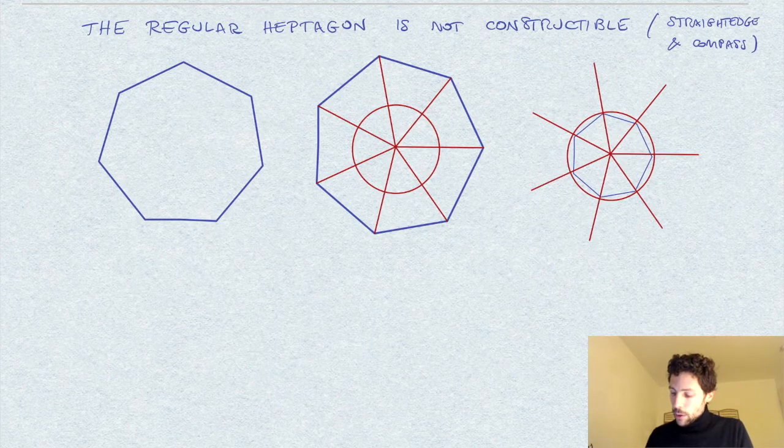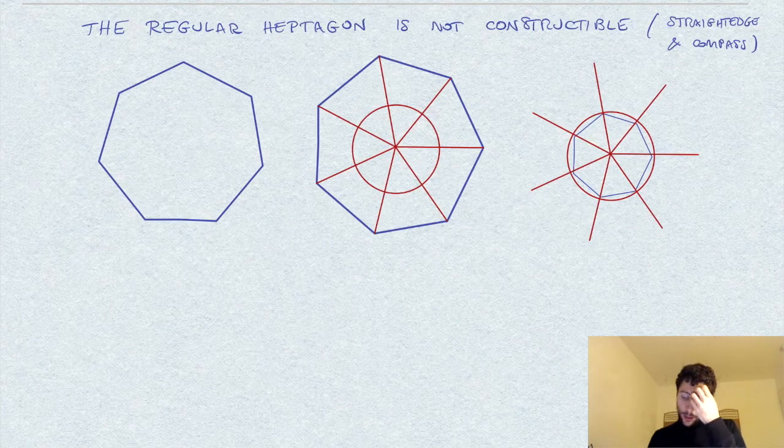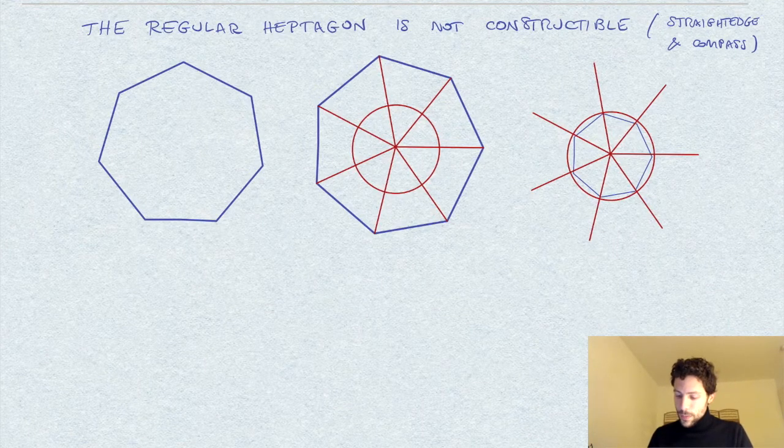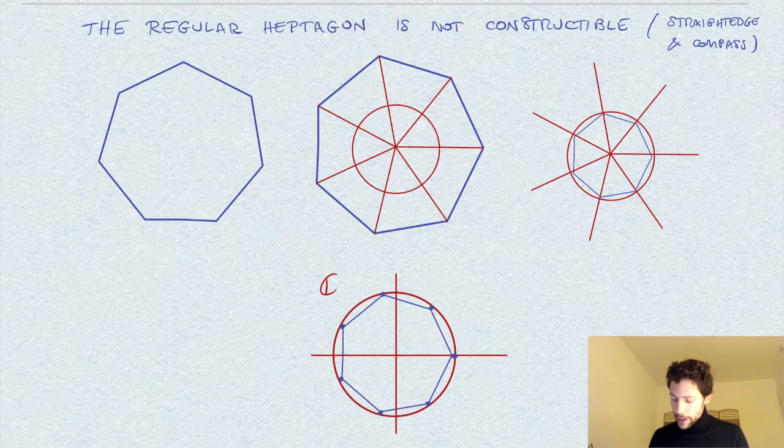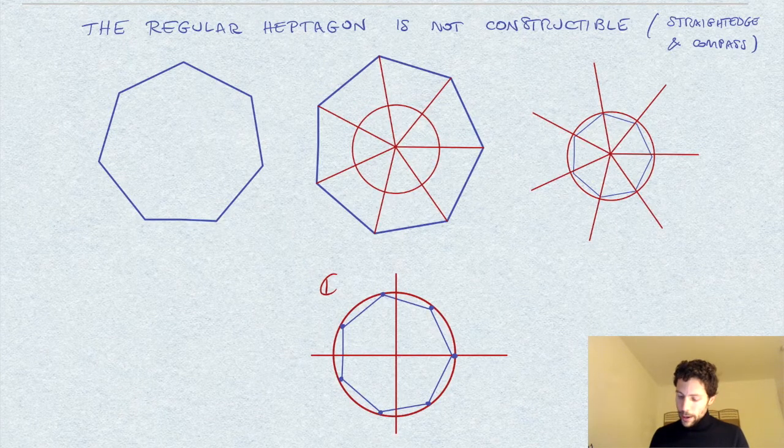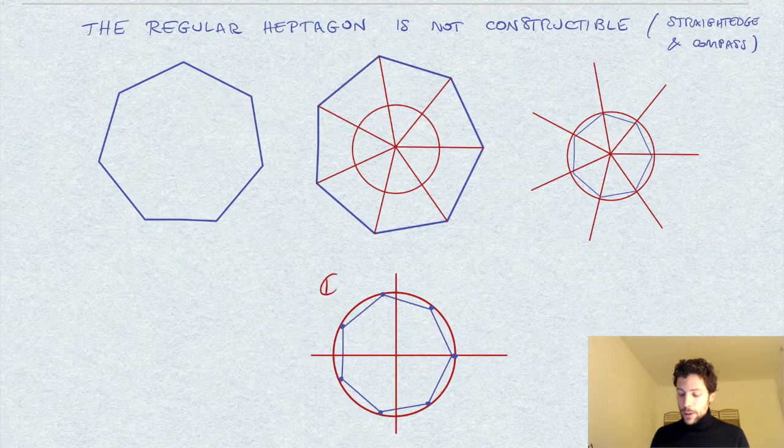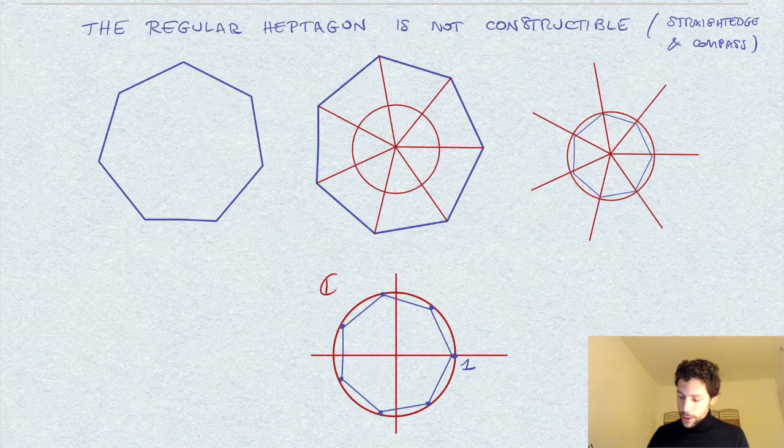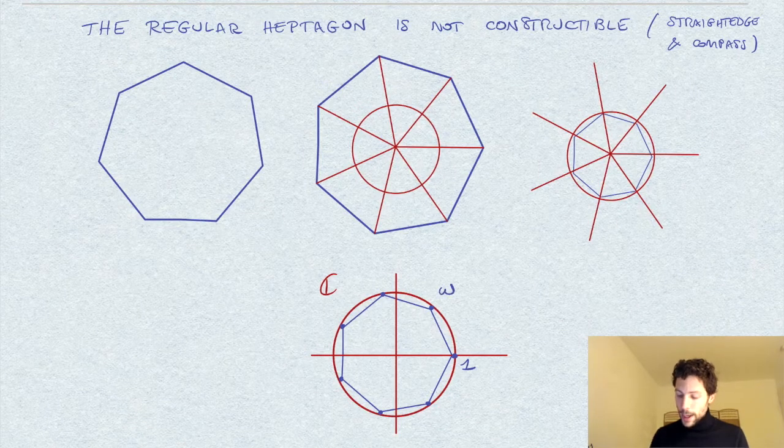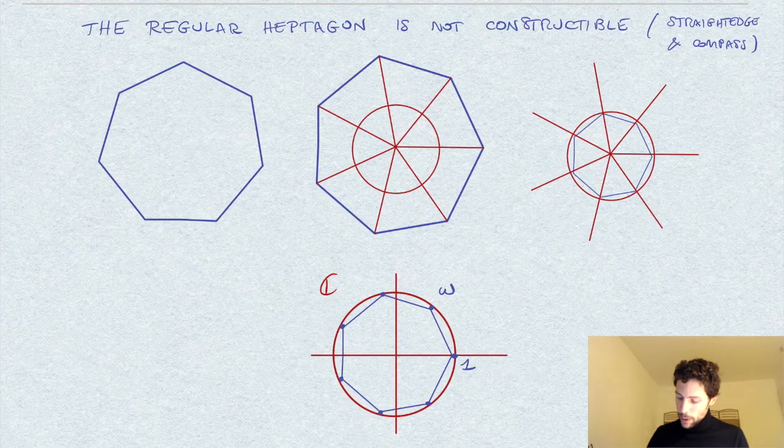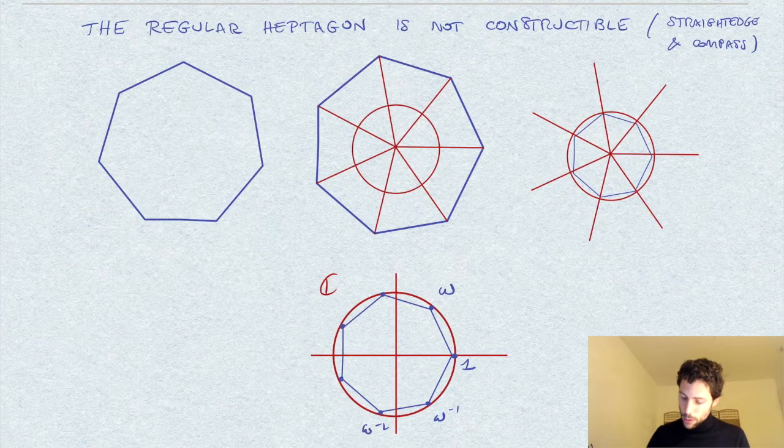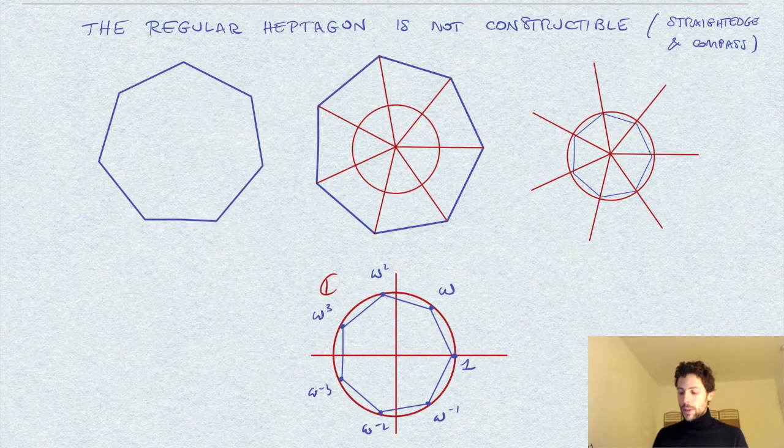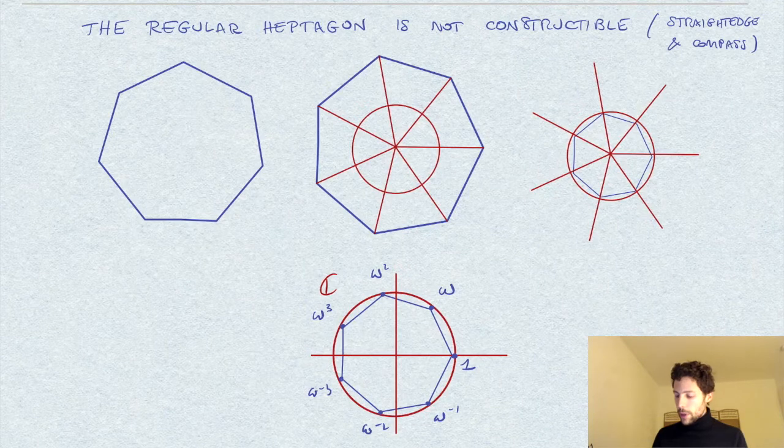The first observation is the following: if I start with a constructible heptagon, I can always reduce, in the complex plane, to have a regular heptagon inscribed in the circle of radius one. In particular, this vertex here would be one, and then the other vertices, which I can call omega and the successive powers of omega, particularly omega to the minus one, minus two, minus three, then omega squared, omega cubed. This omega will be a seventh root of unity.